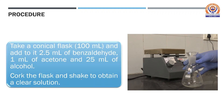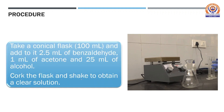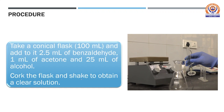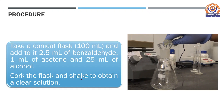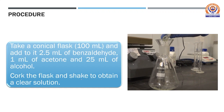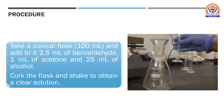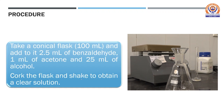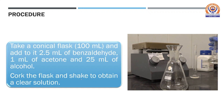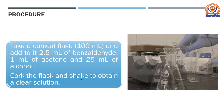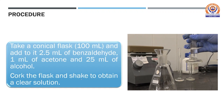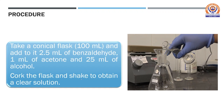Let us now see how to proceed for the synthesis of DBA. In the first step, take a conical flask of about 100 ml capacity and add to it 2.5 ml of benzaldehyde taken in a measuring cylinder, 1 ml of acetone, and 25 ml of alcohol.